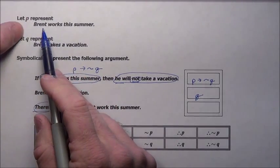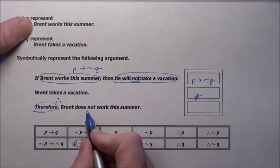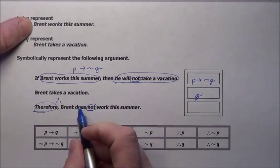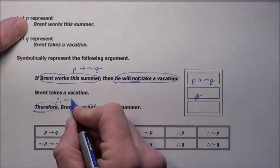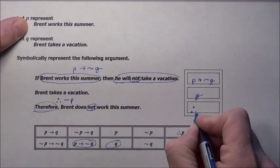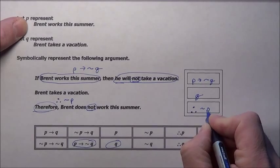Brent works this summer. That's this P statement. But it says Brent does not work. So we want to negate this P statement. So we'll say therefore not P. Therefore not the P statement.